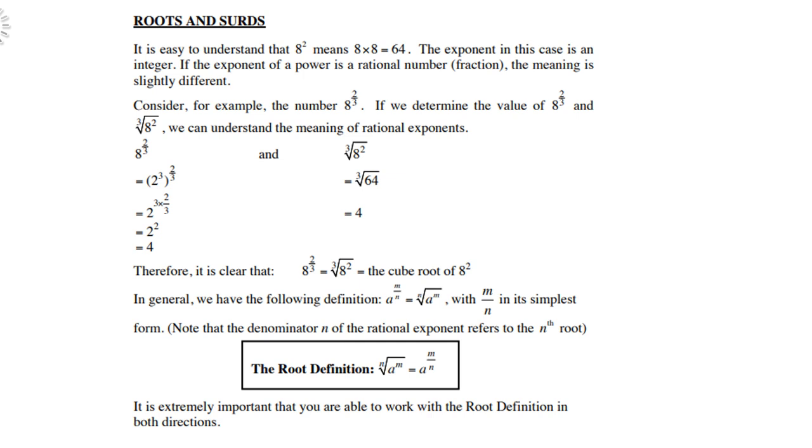With m over n in its simplest form. Note that the denominator n of the rational exponent refers to the nth root. The nth root of a to the power m is the same as a to the power m over n. It is extremely important that you are able to work with the root definition in both directions.